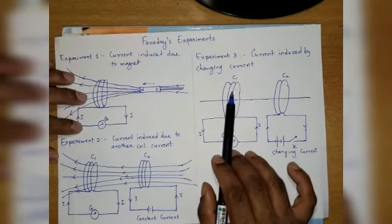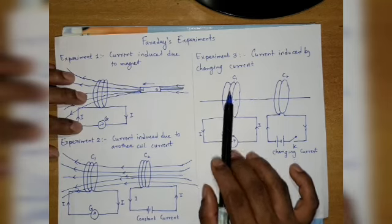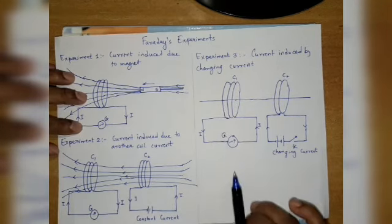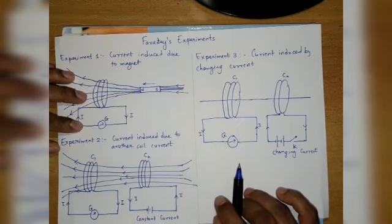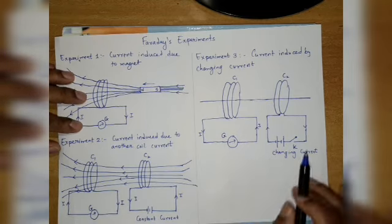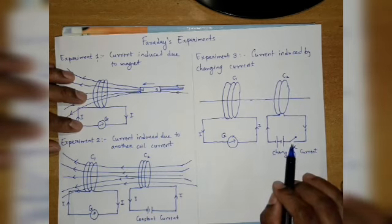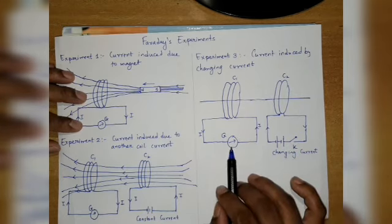When constant magnetic field is suddenly produced, there will be deflection in the galvanometer. But that deflection will not last long. If we keep the switch pressed for a longer time, the galvanometer will return to zero.